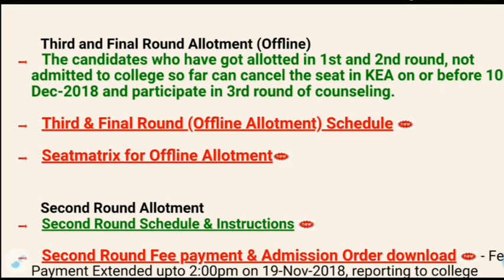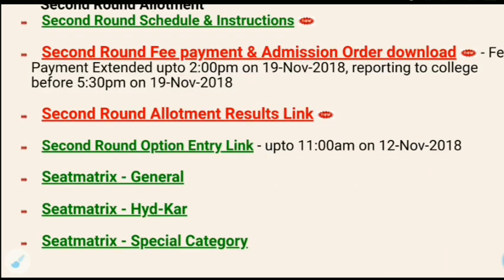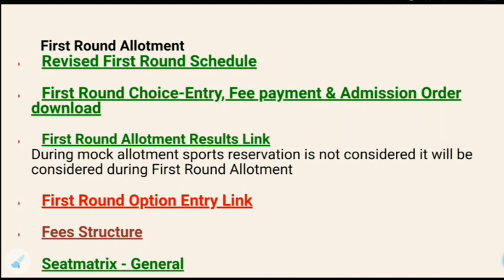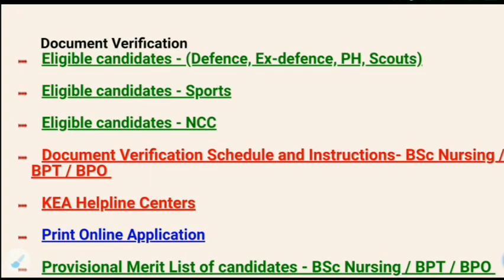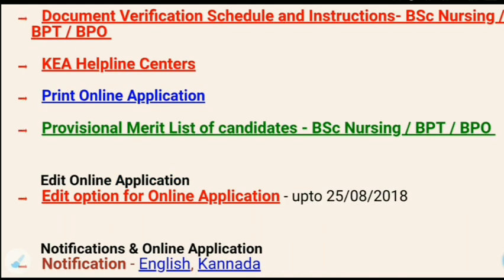Second, the third and final round after an allotment is scheduled. The schedule is established for the due date and updated accordingly. There is a 2nd round allotment result link, and a 2nd round option entry. There is also a 1st round link, fee structure, and seat matrix. There is document verification — in 2018, physical document verification was also conducted. There is no exact information currently, but there is also a help center option.